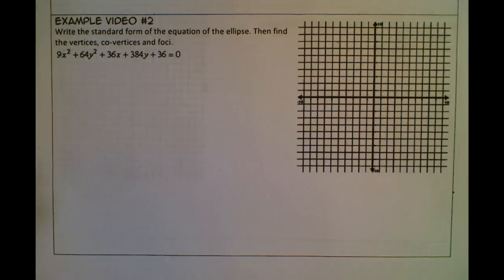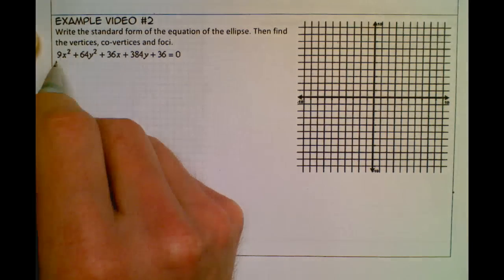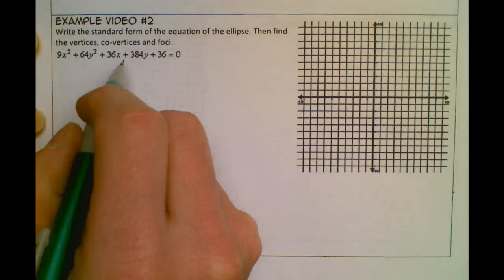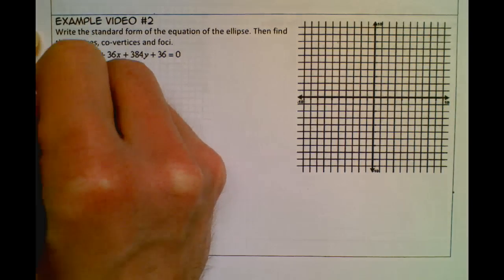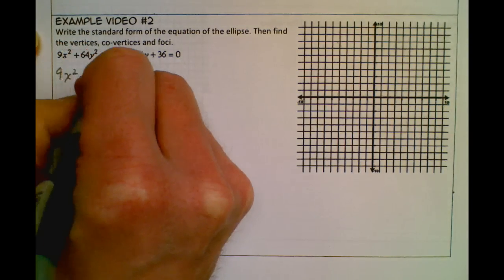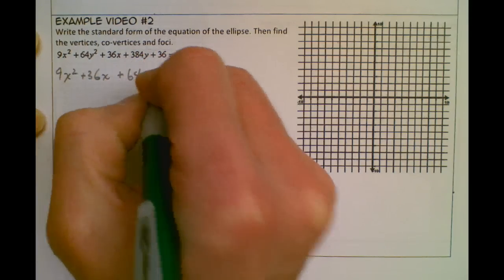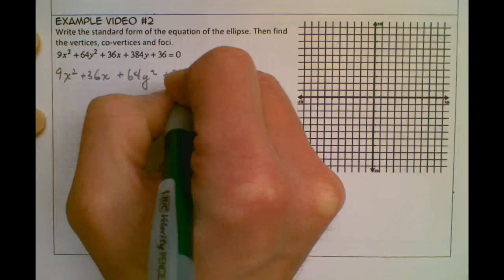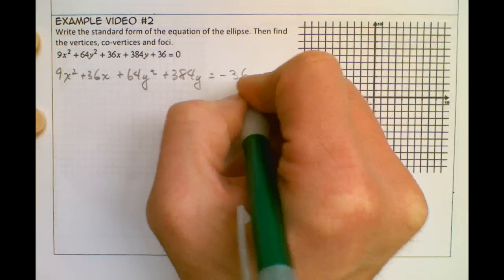Alright, so example video 2 for ellipses. Let's get right into it. We're going to rearrange here. I'm going to put the x's together, so I have 9x² + 36x, and I'm going to put the y's together, so plus 64y² + 384y, and then I'm going to move my constant over to the other side, so minus 36.